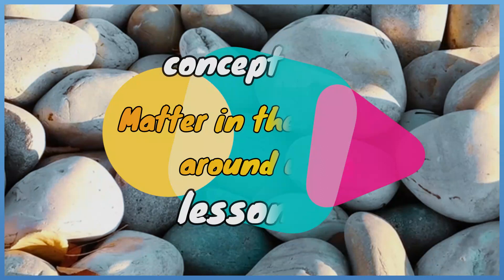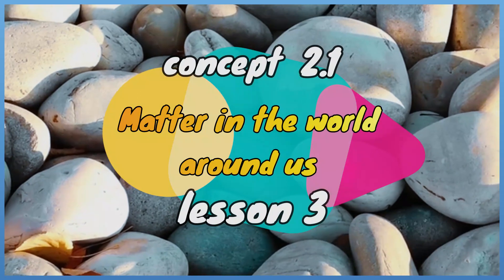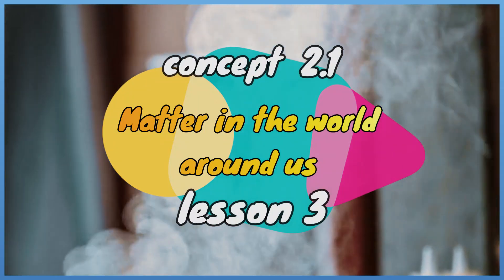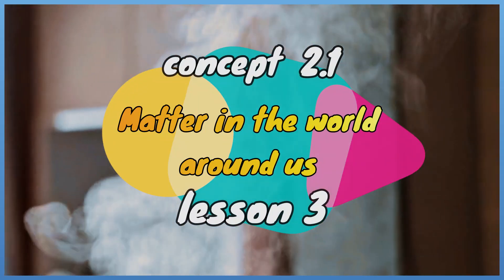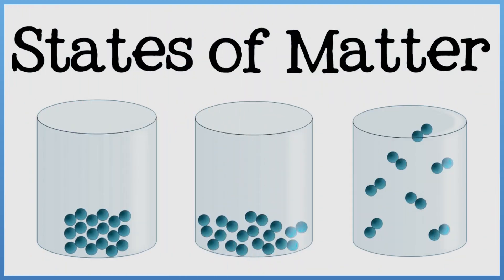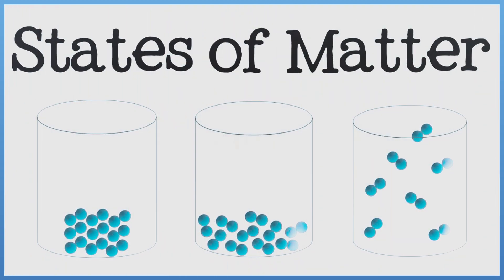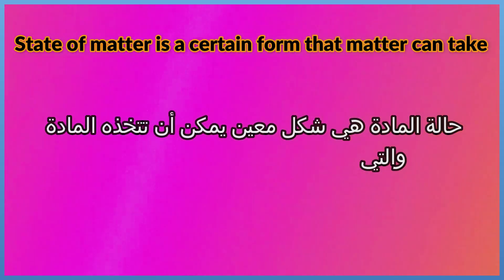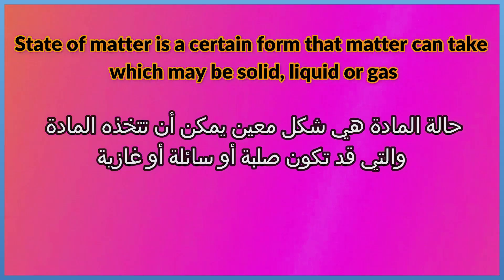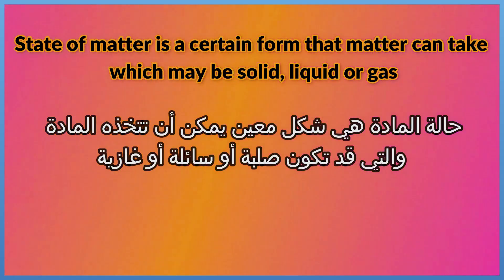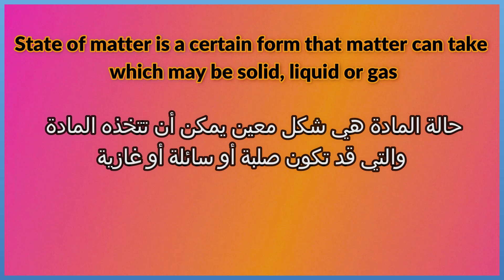Concept 2.1: Matter in the World Around Us, Lesson 3 — States of Matter. A state of matter is a certain form that matter can take, which may be solid, liquid, or gas. Now we will show the differences between the three states of matter.